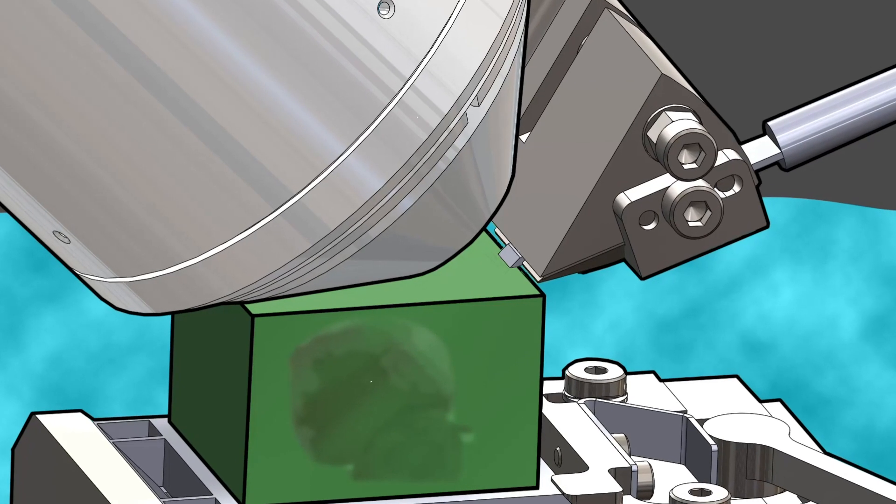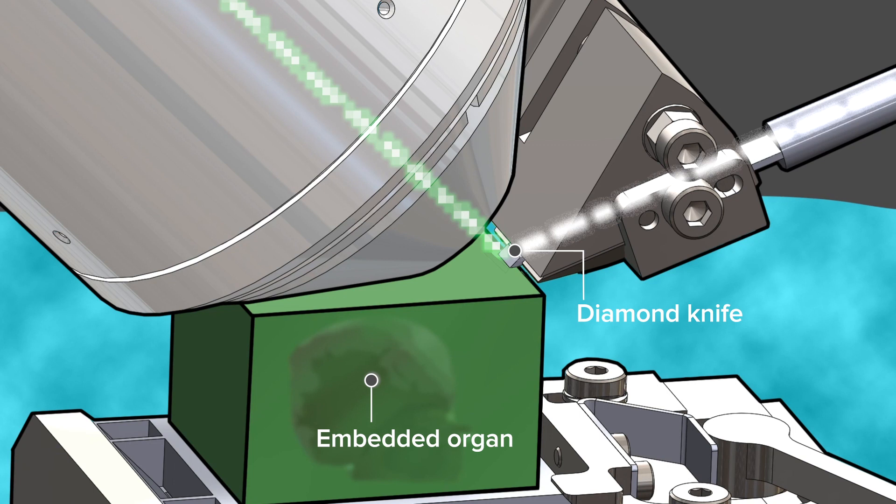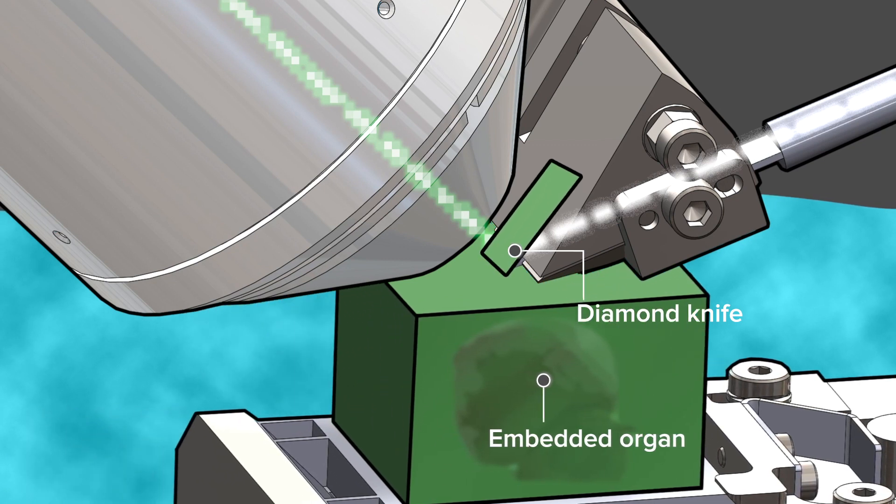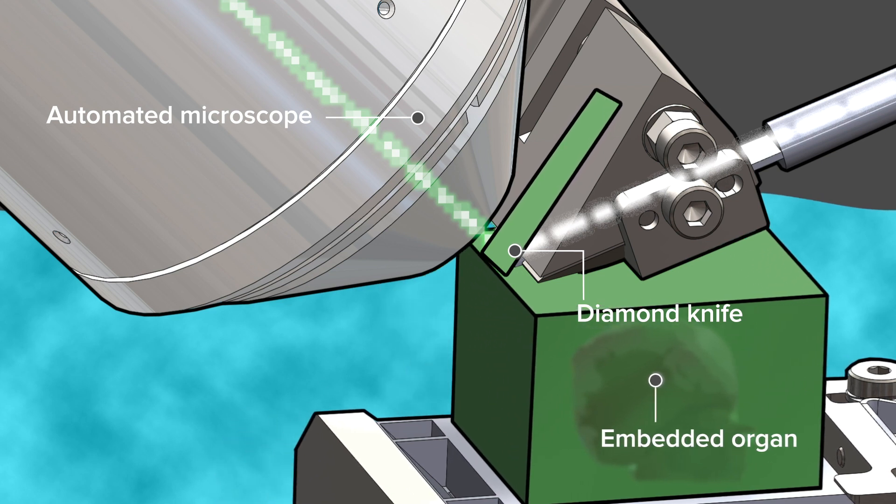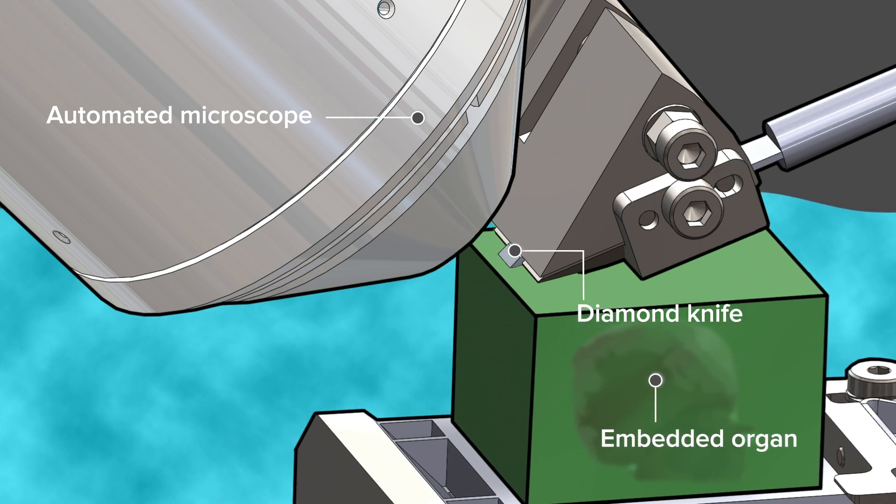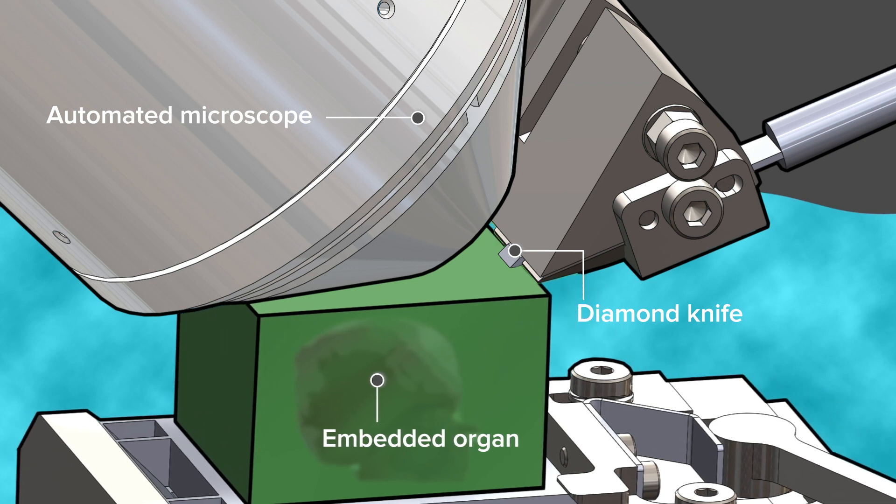The chasm has a diamond knife. This embedded organ is brought against the knife and a section is taken off on top. Pointed at this is an automated microscope and we scan line by line the sample as it's coming up the edge of the knife and that section is taken away.